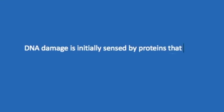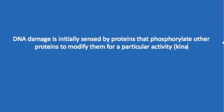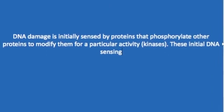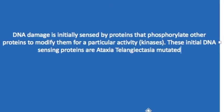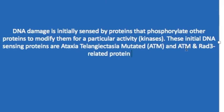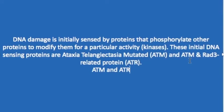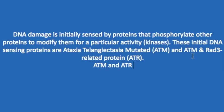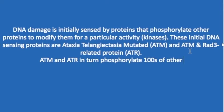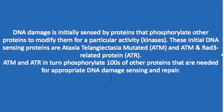DNA damage is initially sensed by proteins that phosphorylate other proteins to modify them for a particular activity — they're called kinases. These initial DNA damage-sensing proteins are ataxia telangiectasia mutated, or ATM for short, and ATM and RAD3-related protein, or ATR. These kinases in turn phosphorylate hundreds of other proteins needed for appropriate DNA damage sensing and repair.